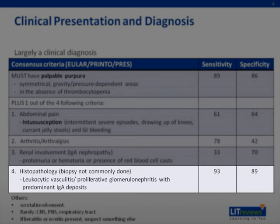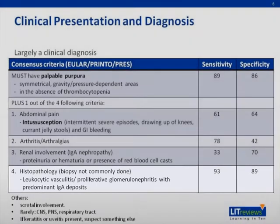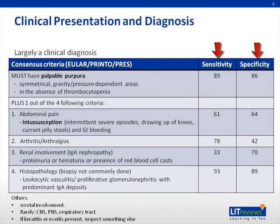However, biopsy is typically avoided, especially since we are dealing with the pediatric population. It is indicated only when the purpura has an atypical presentation, when HSP is suspected but there is no rash, or when renal disease is severe. The presence of each of these clinical findings has its own sensitivity and specificity in diagnosing HSP, as shown here. According to the study, the presence of palpable purpura and just one of the other four criteria was found to have 100% sensitivity and 87% specificity in diagnosing HSP.